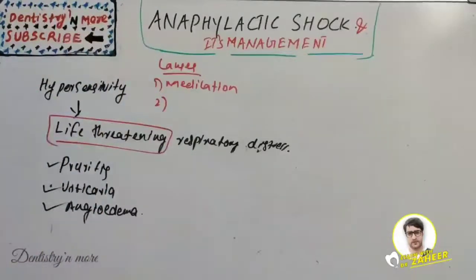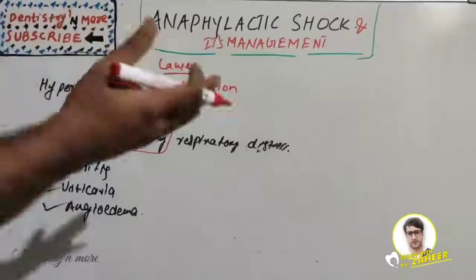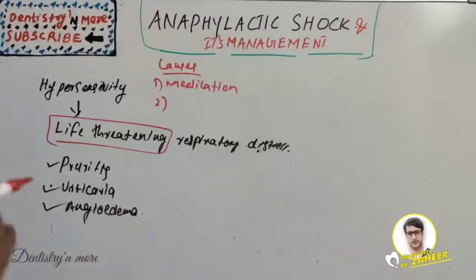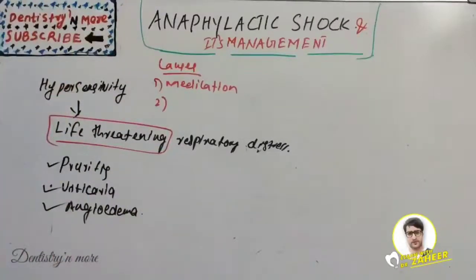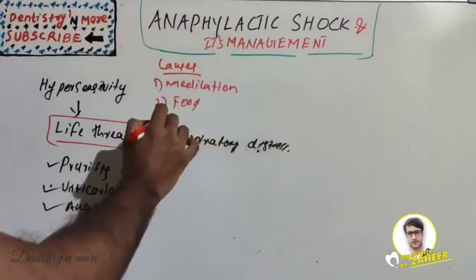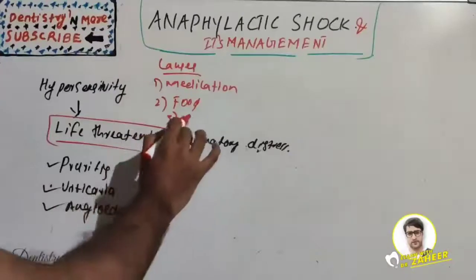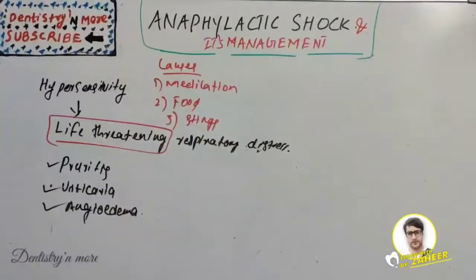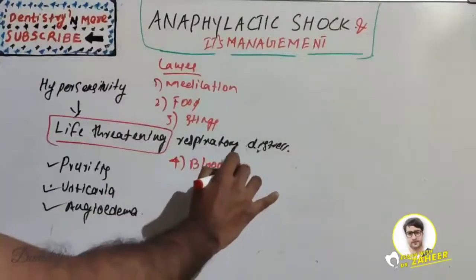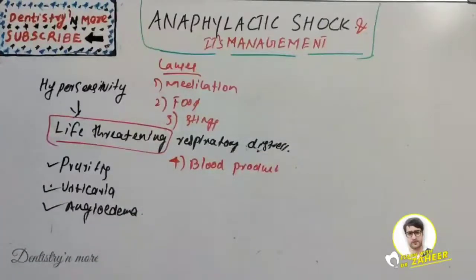Other causes include food such as milk, egg, wheat, and seafood — seafood being a very common allergen that creates anaphylactic shock. This varies from person to person depending on the individual's immunity and reaction to the allergen. Stings from fire ants, bees, wasps, and yellow jackets can also result in anaphylactic shock. Blood products including plasma, immunoglobulin, cryoprecipitate, and whole blood can also cause anaphylactic shock, and idiopathic causes exist as well.